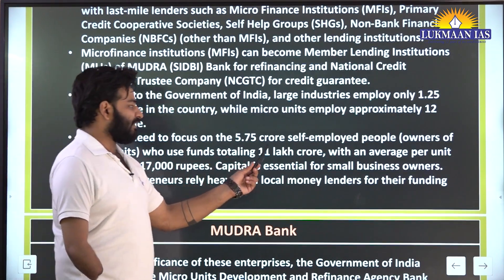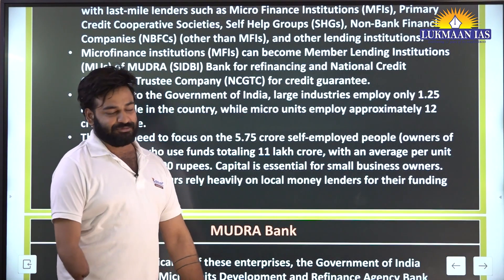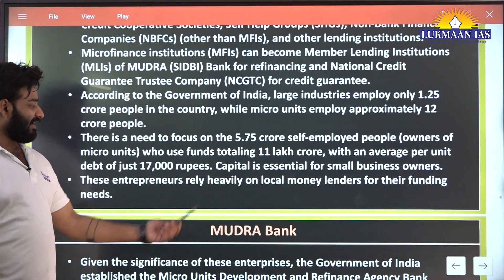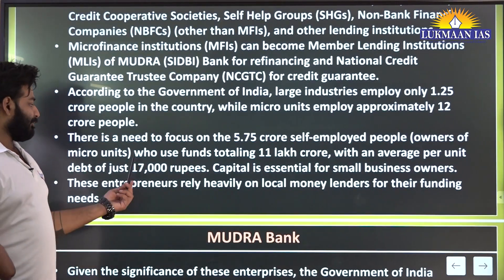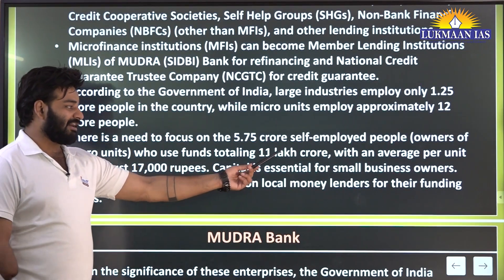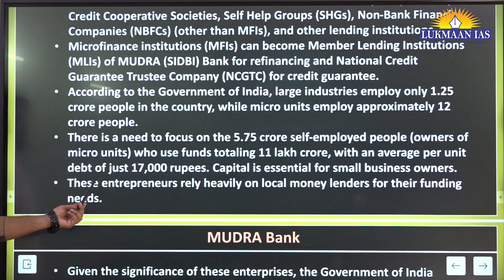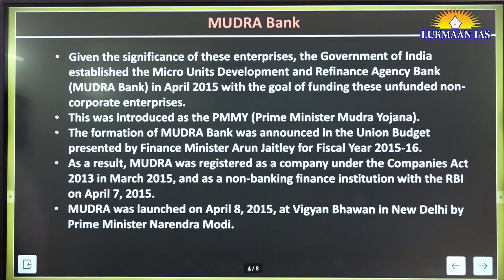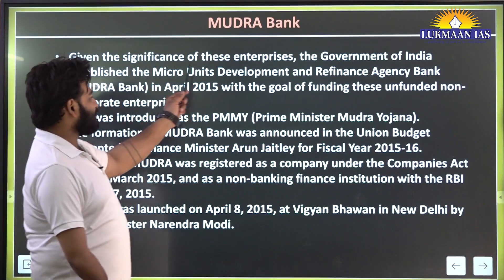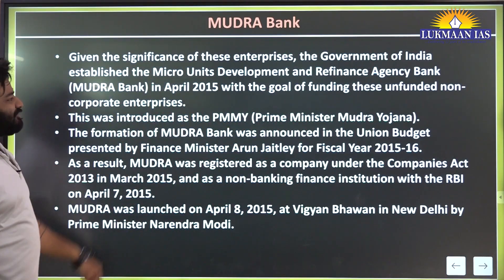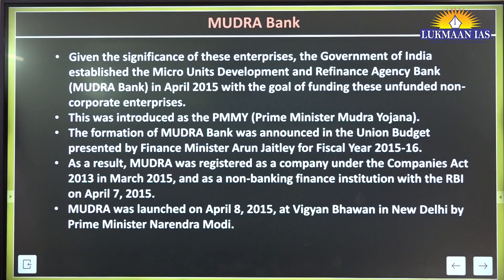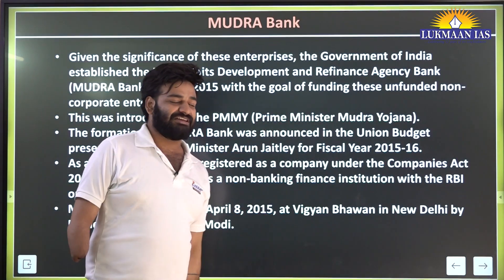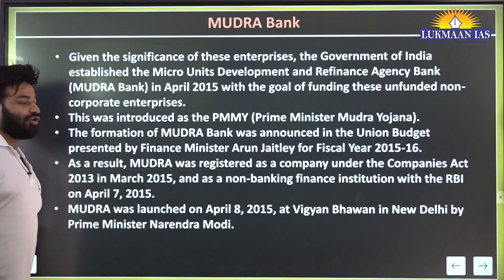There is a need to focus on 5.75 crore self-employed people — that is, owners of micro units — who use funds totaling 11 lakh crores, with an average per unit debt of just rupees 17,000. For that sake only, Mudra Bank came into existence. The Government of India established the Micro Units Development and Refinance Agency — Mudra Bank — in April 2015, with the goal of funding these unfunded non-corporate enterprises.